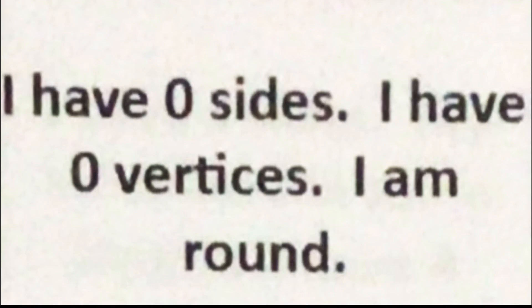So this is the first shape puzzle I'm going to give you. I have zero sides. I have zero vertices. Vertices means like corners. And I'm also round. If you didn't have enough time, you can just pause the video. And if you have no idea what the answer is, don't worry, because I'm going to show you the answer anyways. Your options are going to be a circle or a rectangle. The answer is the circle.